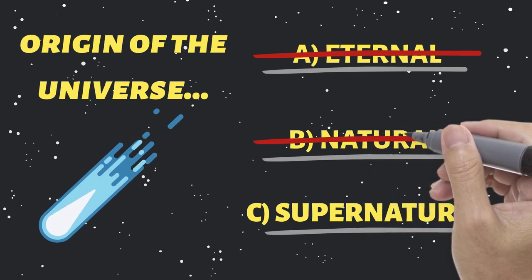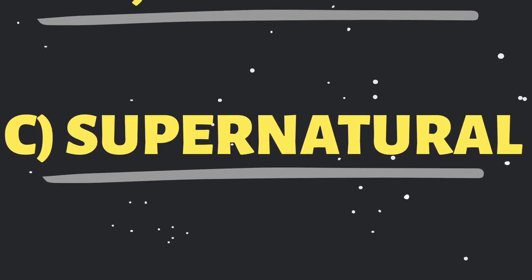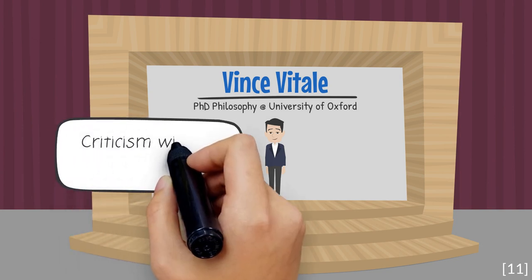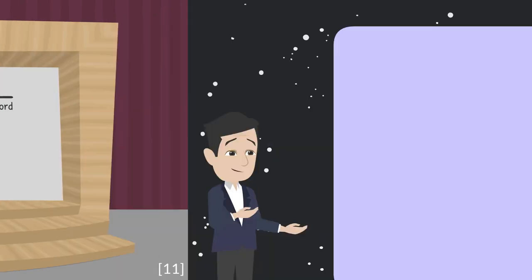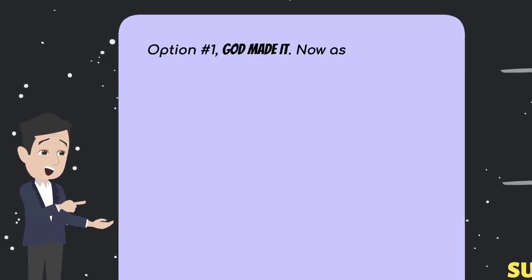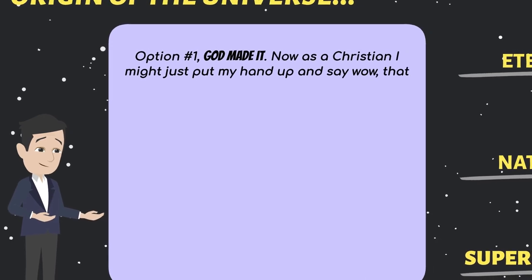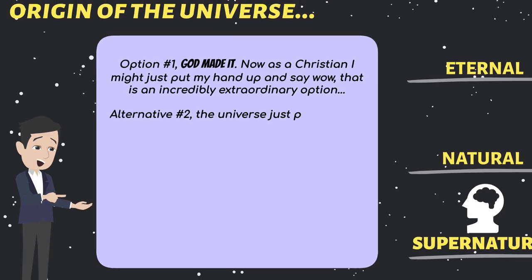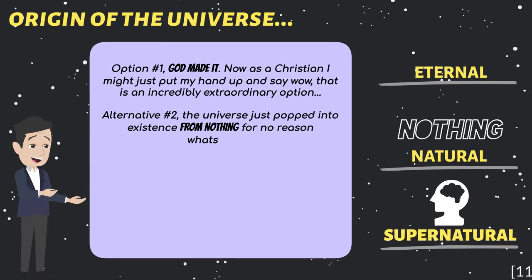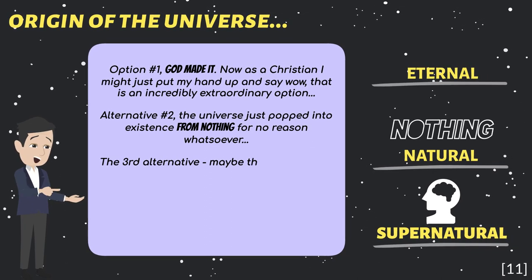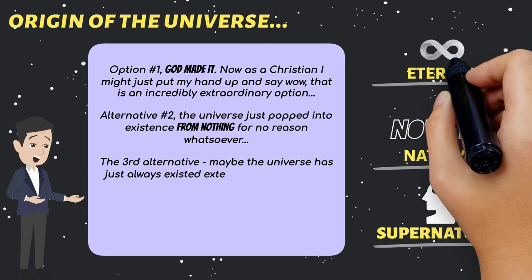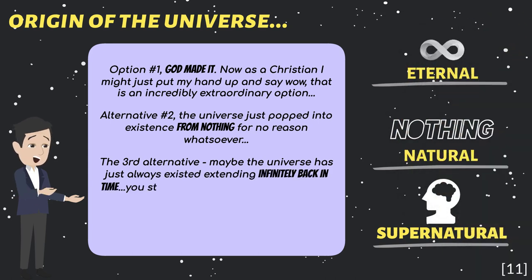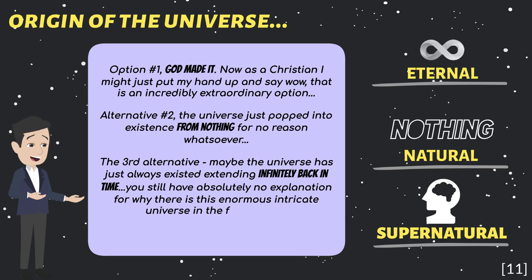Given the choices, is the supernatural option still really a stretch? Dr. Vince Vitale says, criticism without alternative is empty. Option one, God made it. Now as a Christian, I might just put my hand up and say, wow, that is an incredibly extraordinary option. Alternative number two, the universe just popped into existence from nothing for no reason whatsoever. The third alternative, maybe the universe has just always existed, extending infinitely back in time. You still have absolutely no explanation for why there is this enormous, intricate universe in the first place. I call it the normalcy of the supernatural.